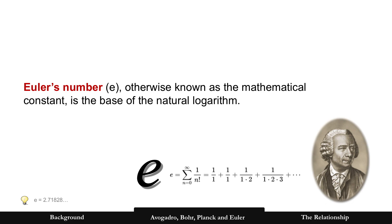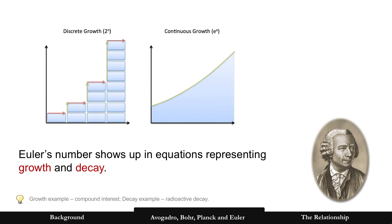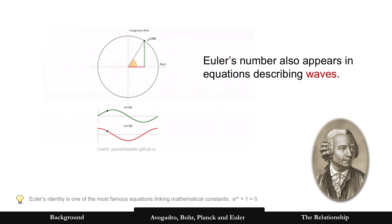All right, one more to cover. Euler's number, otherwise known as the mathematical constant E, the base of the natural logarithm. It shows up in equations representing growth and decay. These are time-based functions like compound interest or radioactive decay. And it also shows up in equations describing waves. All right, so remember this one with waves and Euler's number.